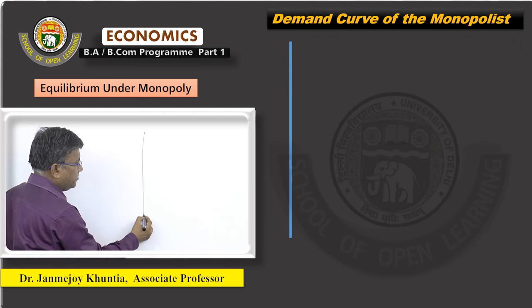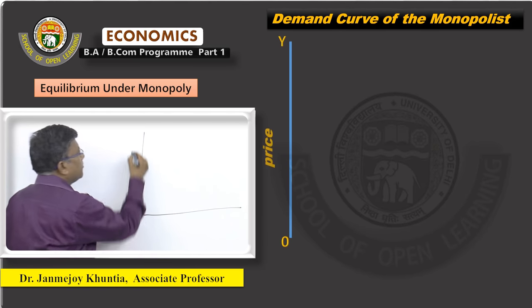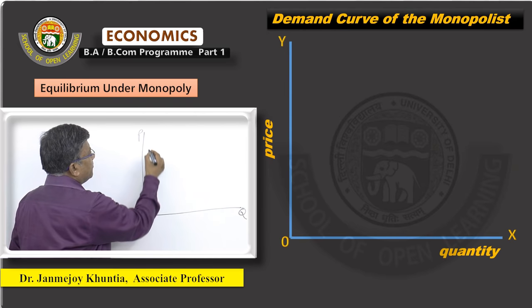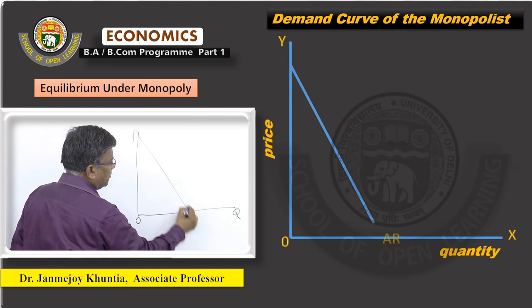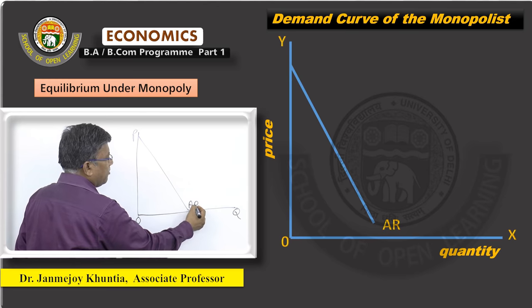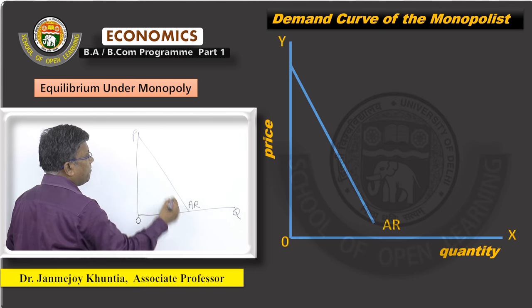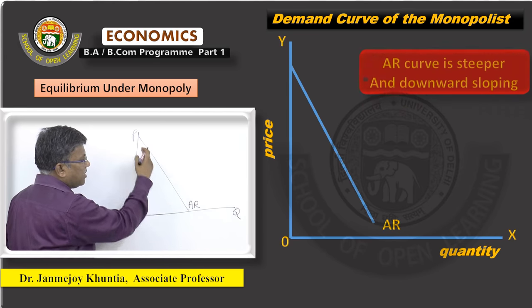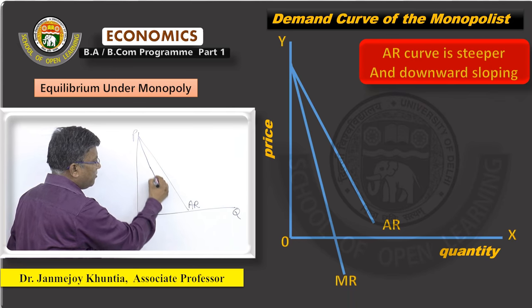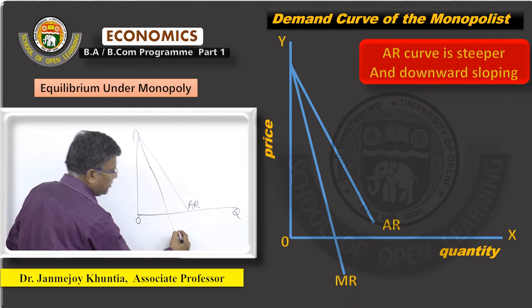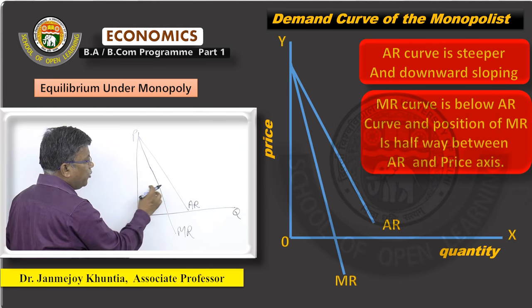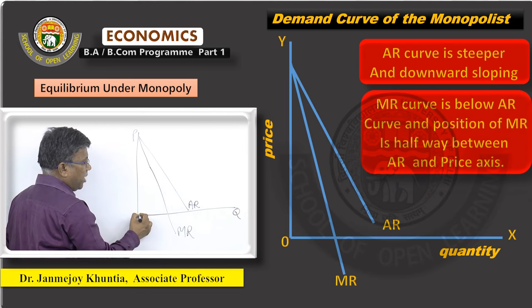Look at the Diagram — this is Price, this is Quantity. The Demand Curve, which is also the Average Revenue Curve depicting the Price and Quantity relationship, is Downward Sloping and Steeper, that is less elastic. The Marginal Revenue will be below the Average Revenue, and the position of the Marginal Revenue will be Halfway between the Average Revenue and the Price Axis.